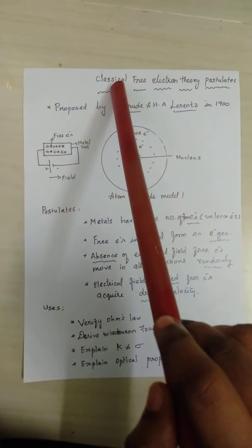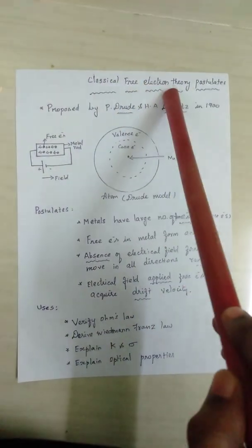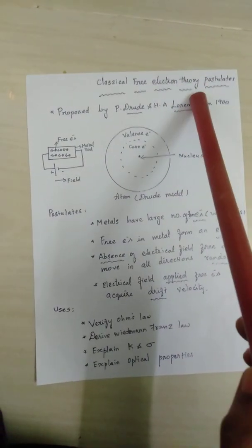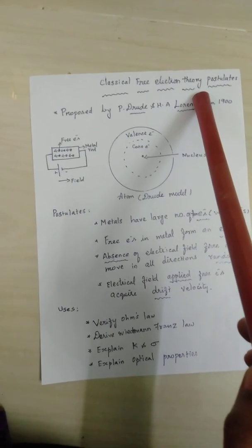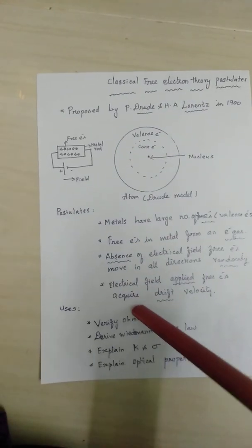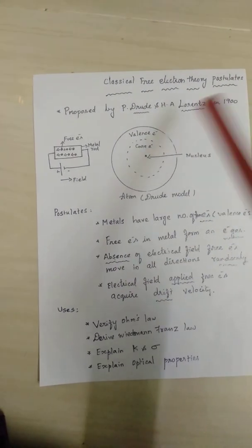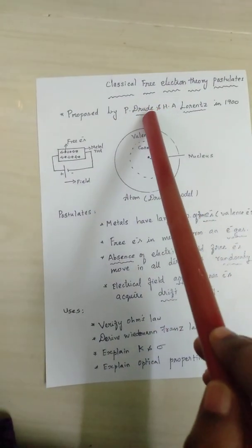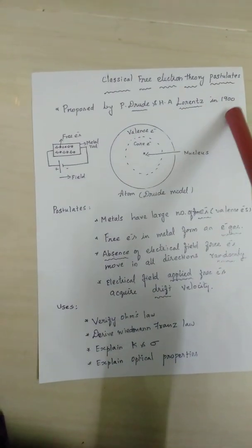Today I am going to explain the topic classical free electron theory postulates. The purpose of studying this theory is to verify Ohm's law and for some other uses. This theory was proposed by the scientists Drude and Lawrence in the year 1900.